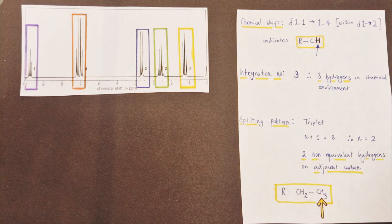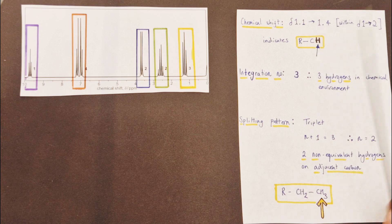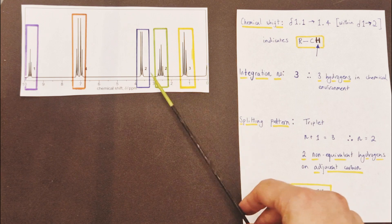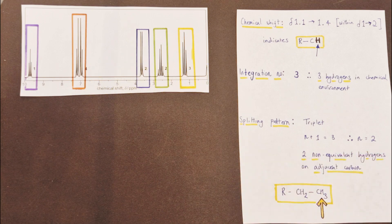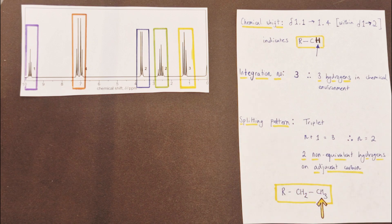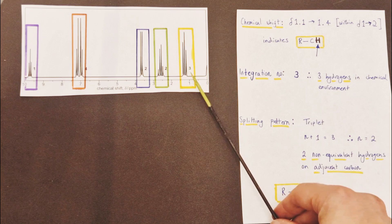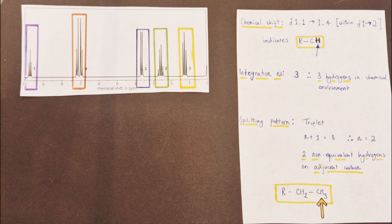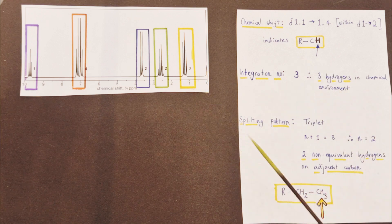Next, the integration number tells us the proportion of hydrogens for each chemical environment. The bigger the number, the greater the number of hydrogens in that environment. If we look at the integration numbers present — 3, 2, 2, 4, and 1 — those add up to 12, and there were 12 hydrogens in the whole molecule. So we can deduce that the integration number is directly linked to the exact number of hydrogens in each chemical environment. The integration number for this triplet peak is 3, meaning there are 3 hydrogens in this particular chemical environment.